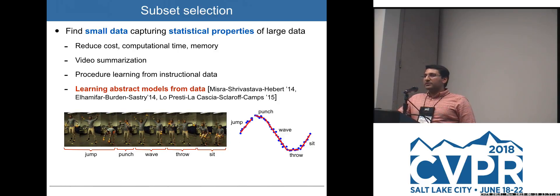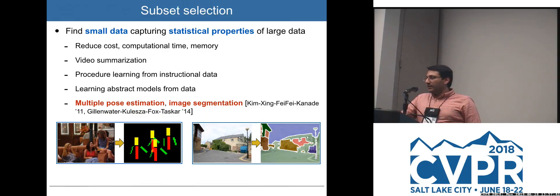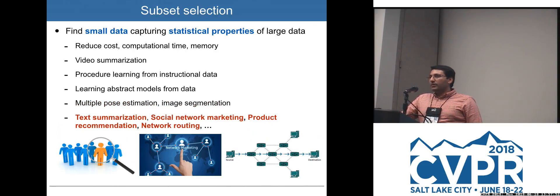Learning abstract models from observations is another application of subset selection: given sequences of observations and a large ensemble of models, the goal is to select a subset of informative, representative models that best encode the observations. This can be used to fit nonlinear models to time series data, perform segmentation of trajectories, multiple pose estimation, and image segmentation. Outside vision, applications also include text summarization, social network and viral marketing, and product recommendation.